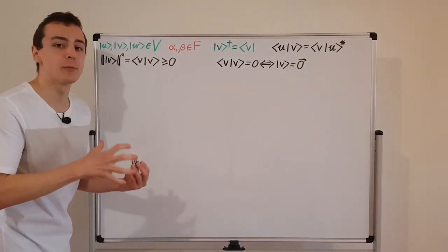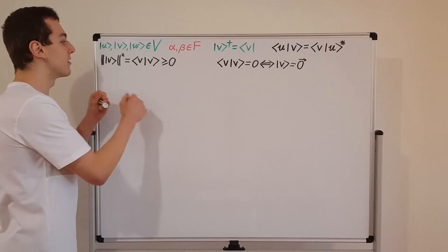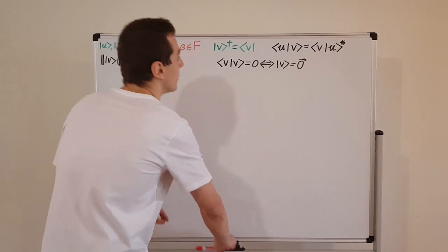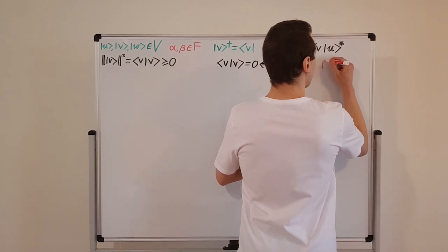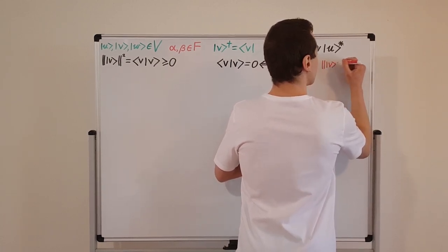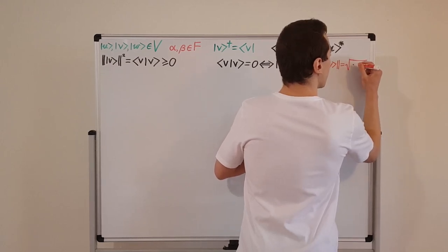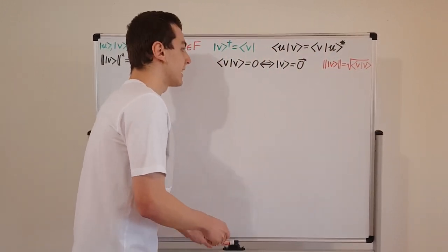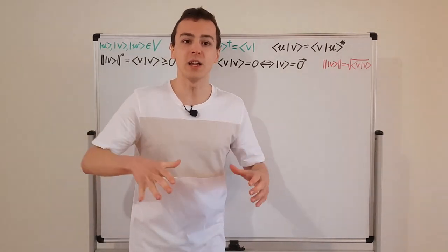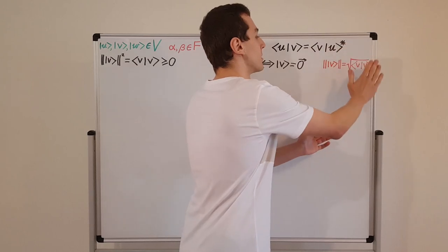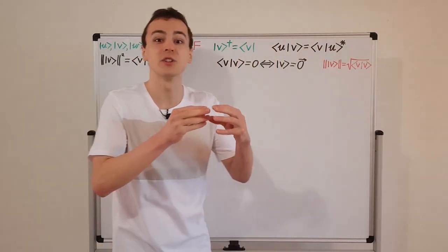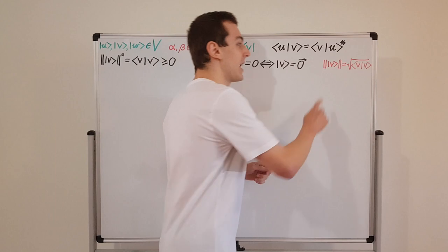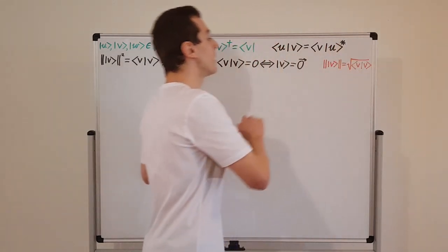We can define the norm by taking the square root: the norm of a vector equals the square root of the inner product of that vector with itself. The norm gives us the length of the vector. For abstract vector spaces this is a more general concept, but if we think of vectors as pointy arrows in 3D space, this is literally the length of the arrow. So we get the norm from the inner product.